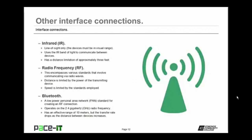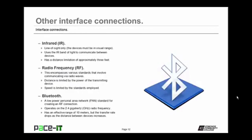Then we have radio frequency, RF, which encompasses various standards involving communication via radio waves. Your distance is limited by the power of the transmitting device, and your speed is limited by the standards employed — we'll get into that more when we talk about wireless networking. Then we have Bluetooth — a low-powered personal area network standard for creating a radio frequency connection. It operates on the 2.4 gigahertz radio frequency, has an effective range of 10 meters, but the transfer rate drops as the distance between devices increases.